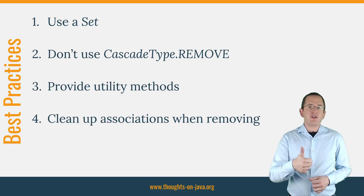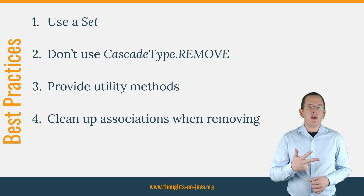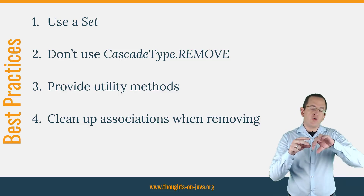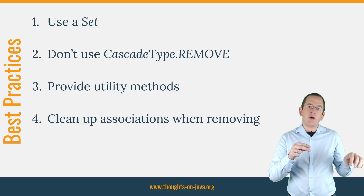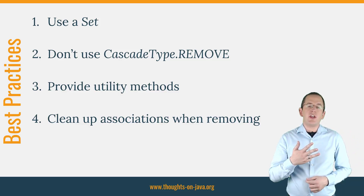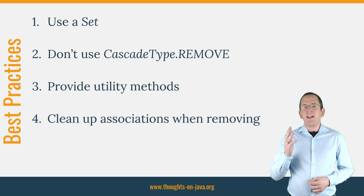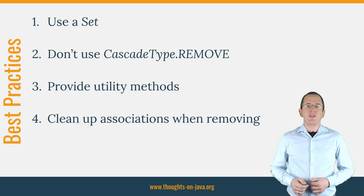You should map the association to a set. You should not use CascadeType Remove. You should provide utility methods to add entities to and to remove them from a bidirectional association. And you need to clean up all associations if you remove the entity that doesn't own the association. Let's take a quick look at all 4 rules.